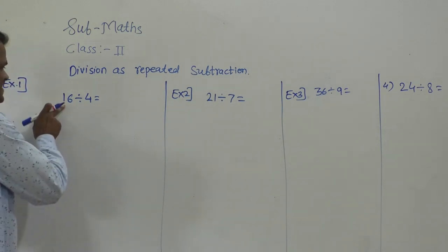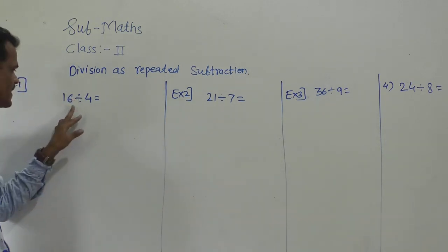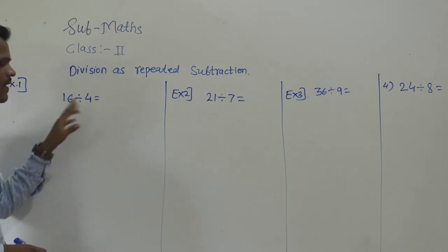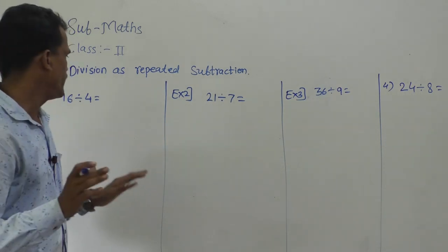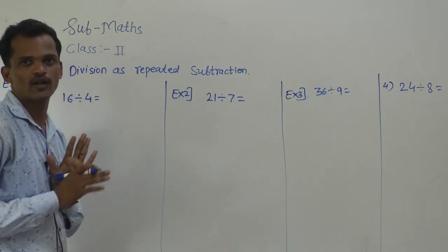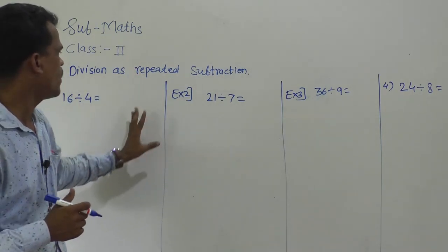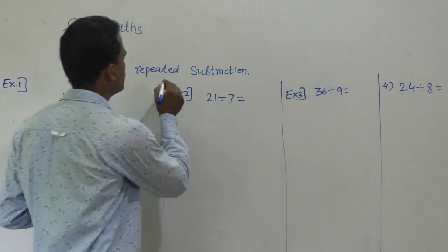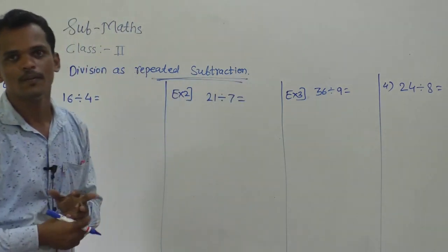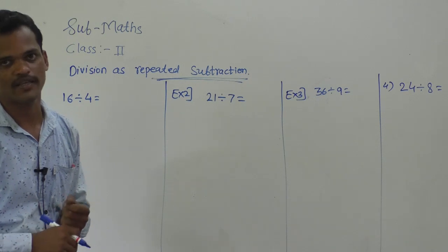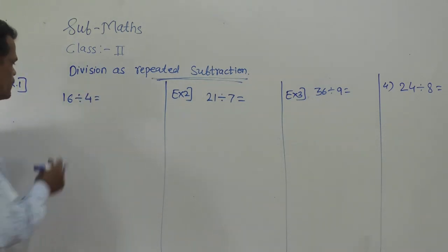This is the example: 16 divided by 4. We have to find out the quotient, and the quotient is the result of division. We have to solve this example by using the repeated subtraction method.